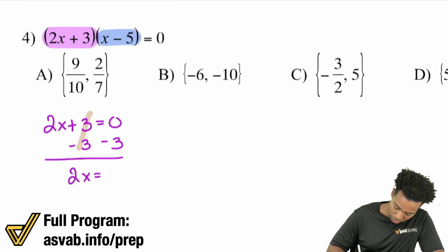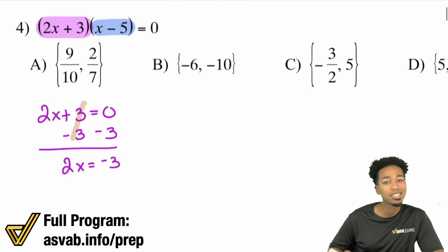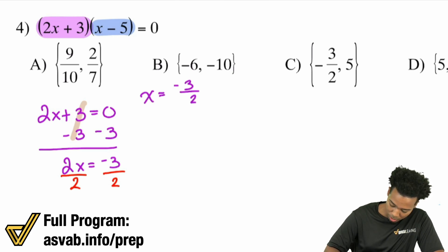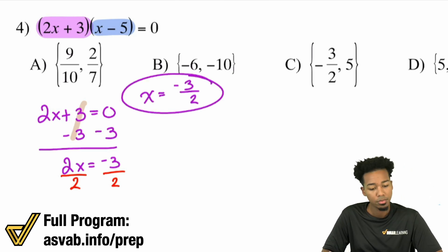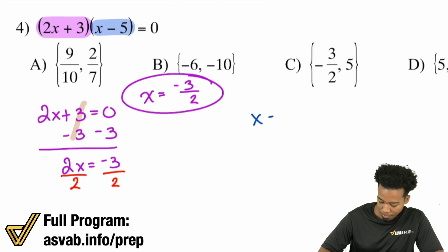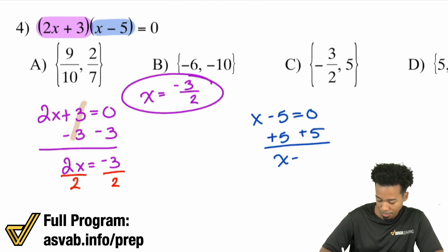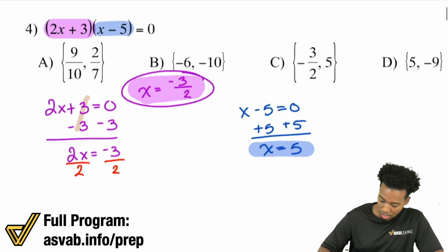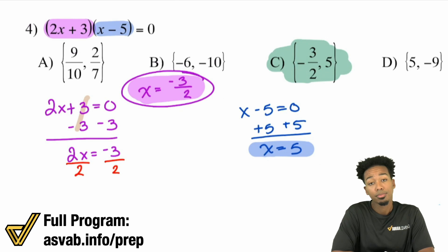That's going to give us two x equals negative three. Then the last thing we'll do is divide both sides by two, giving us x equals negative three halves. So there's one. And now the other one: we have x minus five equals zero. Add five on both sides and we're good — x equals positive five. So those are our answers: negative three halves and positive five. We check our answer choices and see that C is the correct answer.